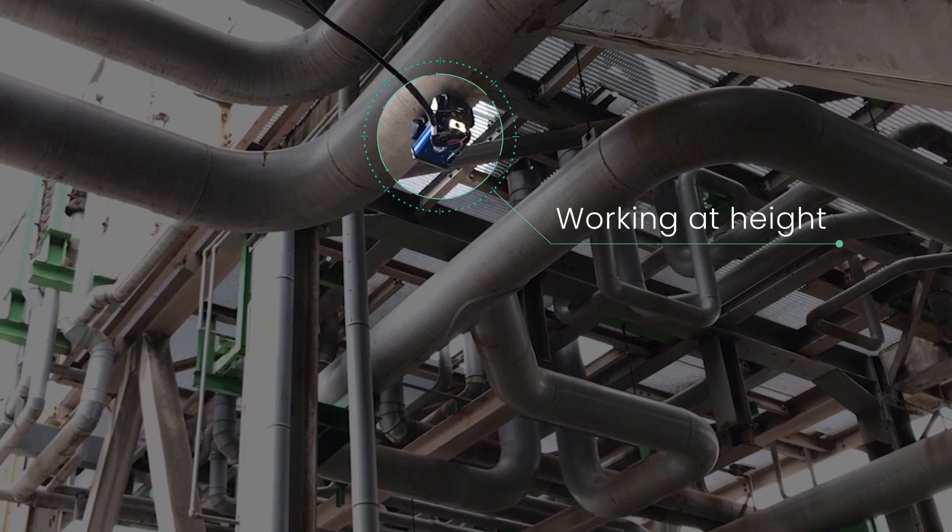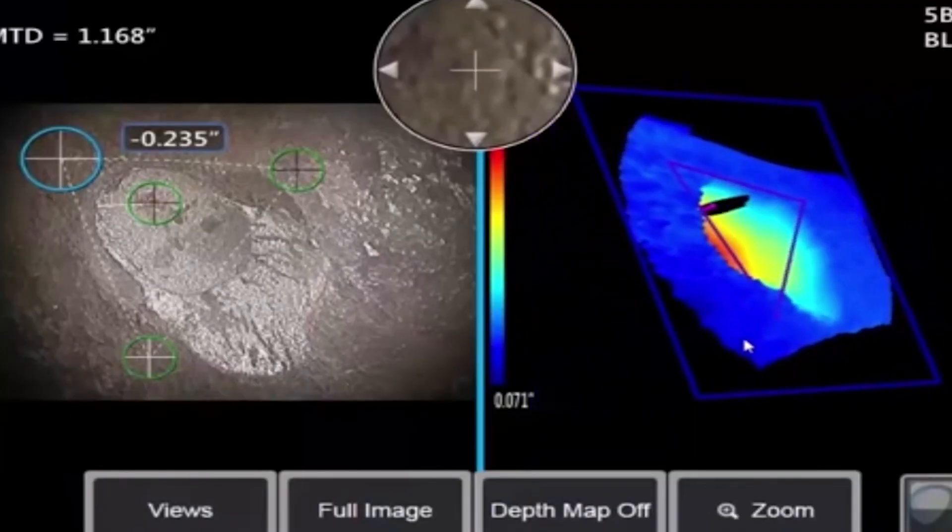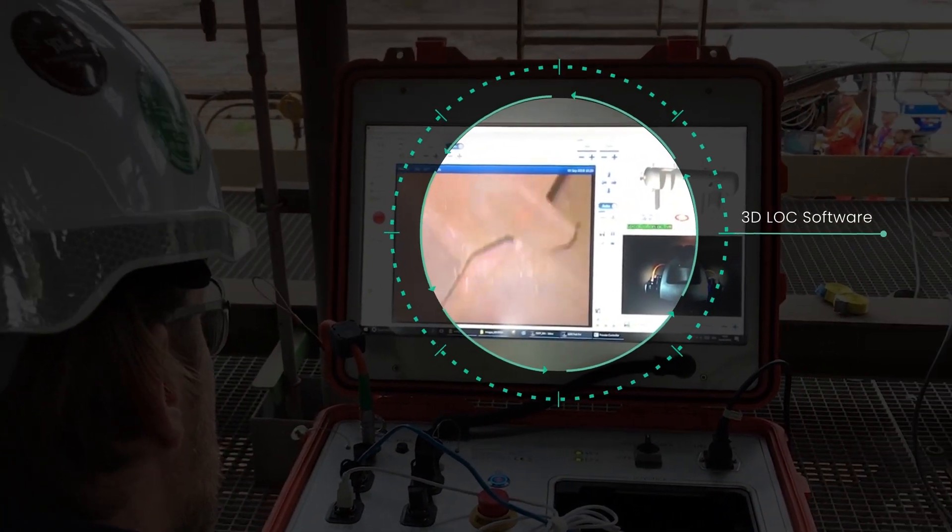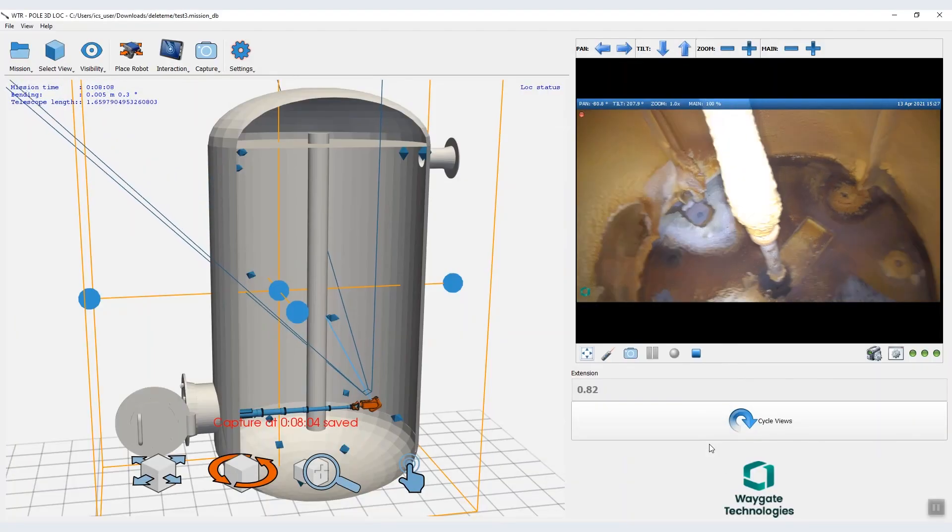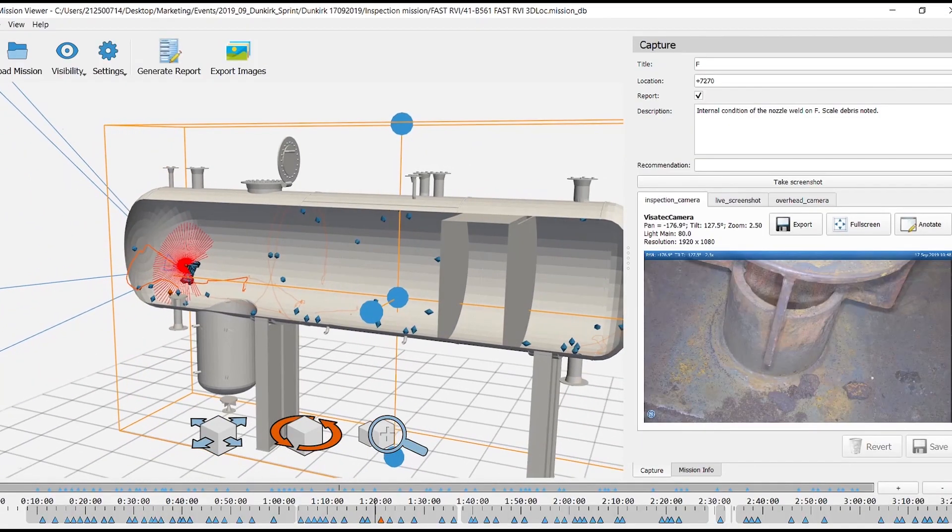With modules to collect ultrasonic, eddy current, video probe or structure light NDT data. With 3D lock software, all inspection data is automatically tagged with the precise position inside the asset, while a digital twin containing all the inspection data is maintained.